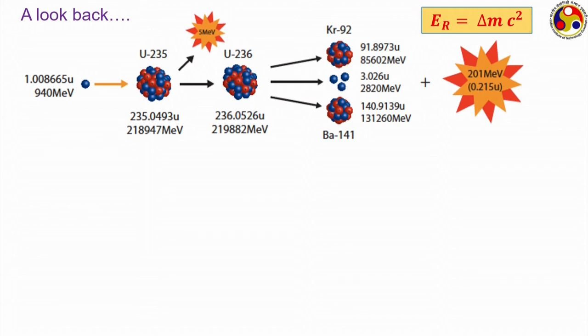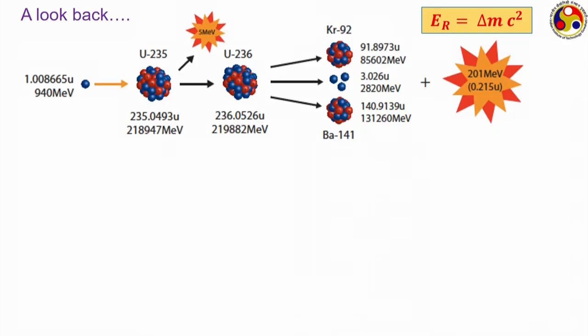In the first module we learned how to calculate the amount of energy released. We can calculate the mass defect — the combined mass of the products is slightly less than the combined mass of the reactants — and mass defect multiplied by c² gives the total energy released. In nuclear reactions the mass defect is vastly larger than in chemical reactions, giving energy releases of the order of 10⁶ to 10⁷ times greater than an equivalent chemical reaction.